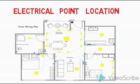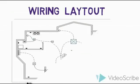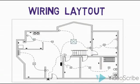For electrical point location, we have a simple diagram. If you want to place lights, there will be different distances — this is the distance of the electrical point. For bathroom, kitchen, and sockets, we will create a wiring layout using PVC pipe and a pipe layout.